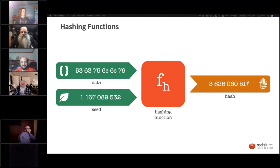A hashing function takes data and flattens it down to a single number — maybe a 32-bit, 64-bit, or 16-bit number — compressing it down. That's what hashing functions do.